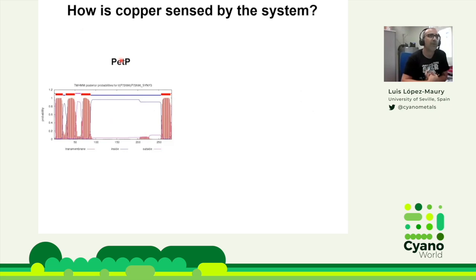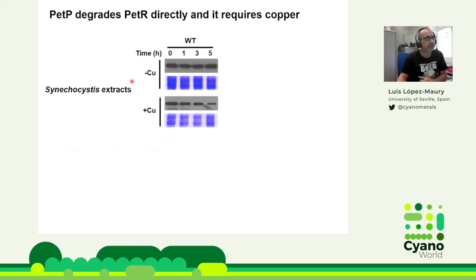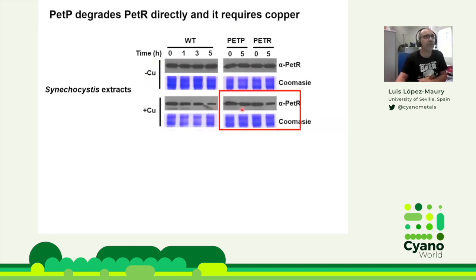Unfortunately the protease is an integral membrane protein, so biochemistry was not straightforward — we couldn't purify it because it was insoluble. So we set up an in vitro assay using whole cell extracts of Synechocystis containing both cytosol and membranes. We added recombinant PETR and followed its degradation over time. Without added copper there was no degradation, but degradation was activated by copper. This degradation depended on PETP, because in a mutant lacking the protease there was no degradation, while degradation was still seen in a PETR mutant strain.